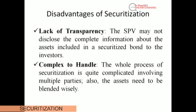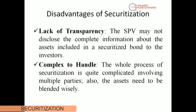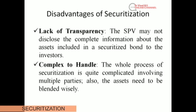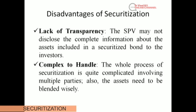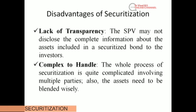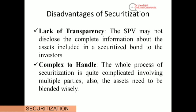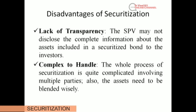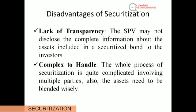Now let us see the limitations of securitization. The first limitation is lack of transparency — the SPV may not disclose complete information about the assets included in the securitized bond to investors. The second limitation is complexity — the whole process of securitization is quite complicated, involving multiple parties, and these assets need to be blended wisely.